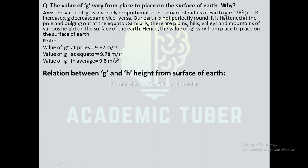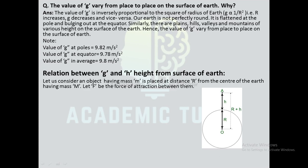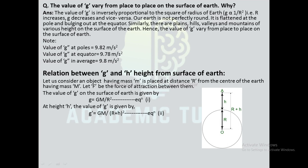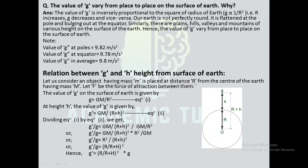Relation between g and height from the surface of Earth: Consider an object of mass m at distance r from Earth's center (mass M). On the surface, g = GM/r² (equation 1). At height h, g' = GM/(r+h)² (equation 2). Dividing equation 1 by equation 2: g' = [r/(r+h)]² × g. This is the relation between g and height from Earth's surface — as height increases, g decreases.